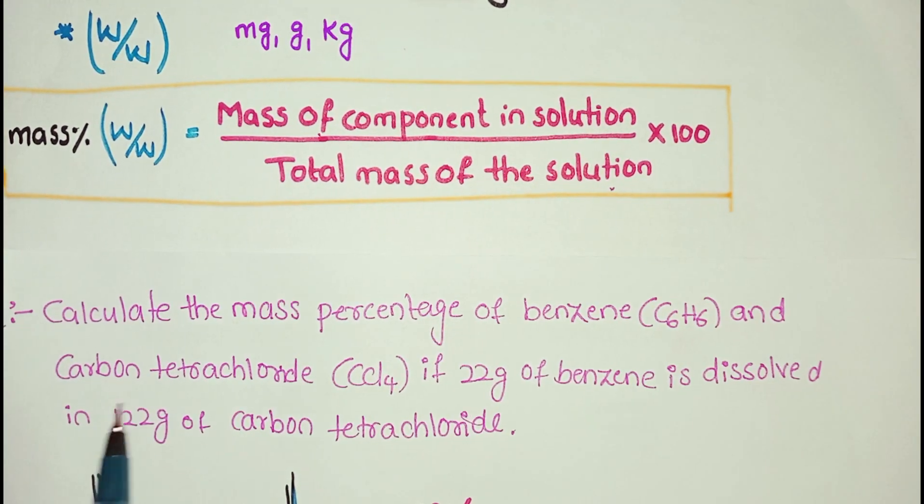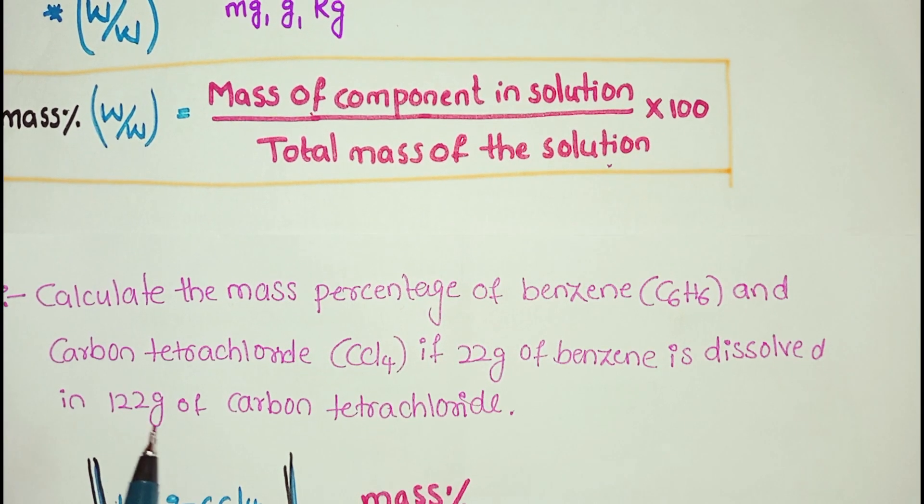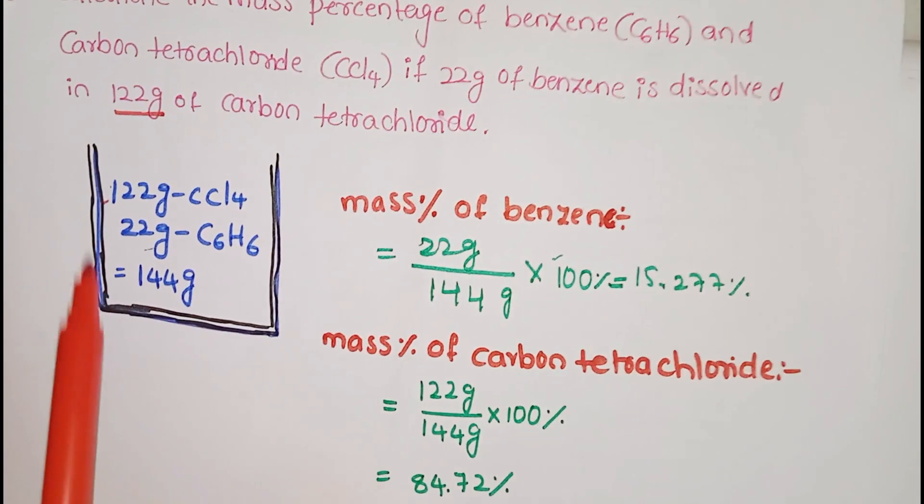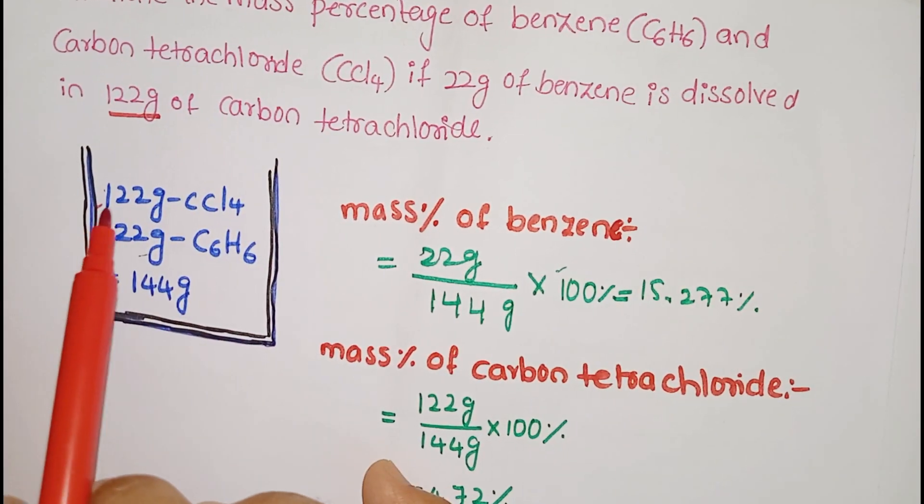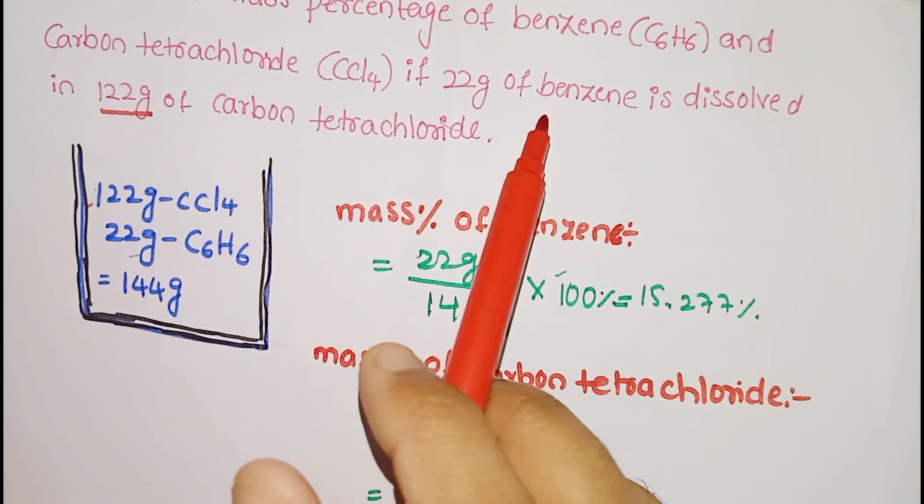If 22 grams of benzene is dissolved in 122 grams of carbon tetrachloride. A simple understanding here: I've taken a beaker. In the beaker, 122 grams CCl4 is taken and 22 grams of benzene dissolved in the CCl4.